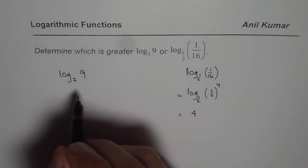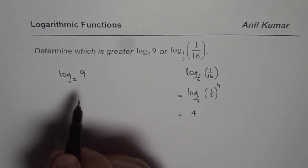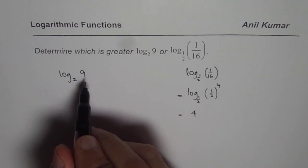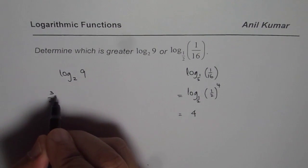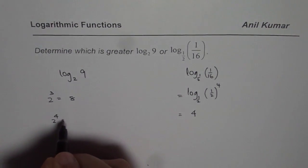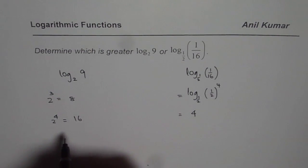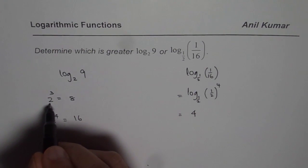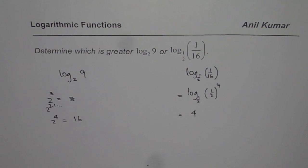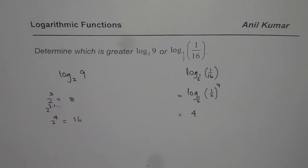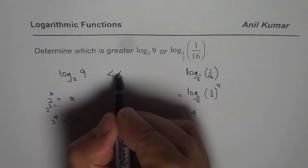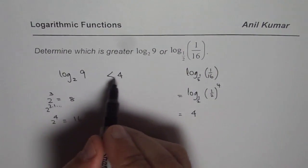Now, what about log base 2 of 9? Can we write 9 as 2 to the power of something? Not exactly. What we know is that 2 to the power of 3 is 8, and 2 to the power of 4 is 16. So 9 is roughly 2 to the power of 3.1 or 3.2 — but it is definitely less than 4. So log base 2 of 9 is less than 4.